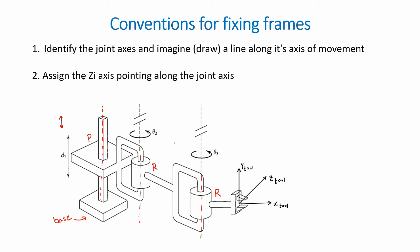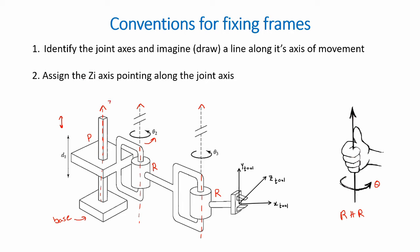We need to find the direction of these three joint axes. For revolute joints, the direction can be found using the right-hand rule, where the four fingers represent the direction of rotation theta and the thumb points in the positive direction of the joint axis. For our two revolute joints rotating in this direction, they point upwards. The same applies to the prismatic joint, which also points upwards as it moves away from the base. This gives us the Z-axes: z1, z2, and z3 for the three joints.